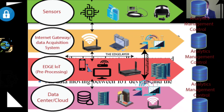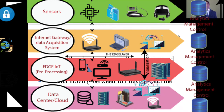All data moving between IoT devices and the cloud passes through an IoT gateway. Whatever data is collected by the sensors and converted into digital form by the data acquisition system is then shared for further analysis with the help of these gateways. We cannot ignore the importance of IoT gateways.